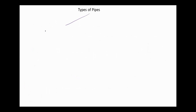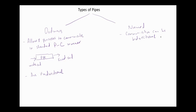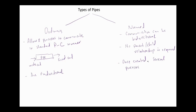There are two types of pipes: ordinary and named. Ordinary pipes allow two processes to communicate in a standard producer-consumer manner — one process writes to one end (the writer end) and another process reads from the other end (the read end). Ordinary pipes are unidirectional, allowing only one-way communication. In named pipes, communication can be bi-directional, and no parent-child relationship is required. Once a named pipe is created, several processes can use it for communication.